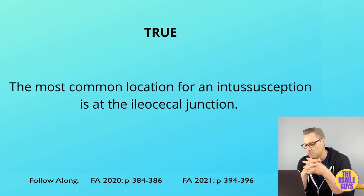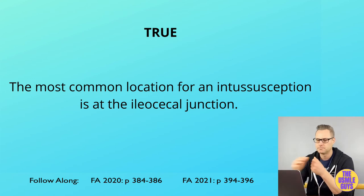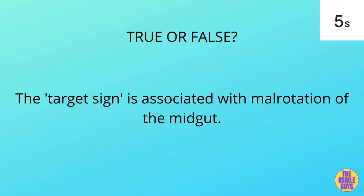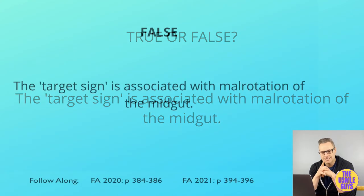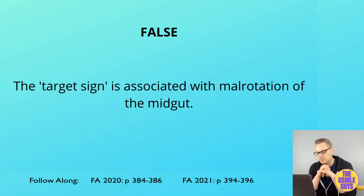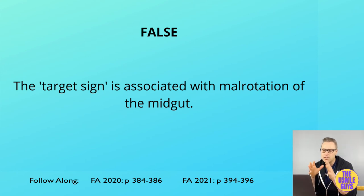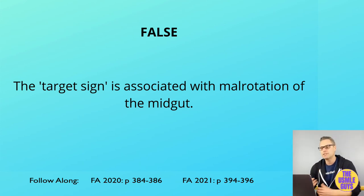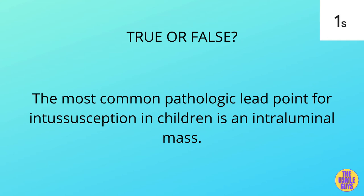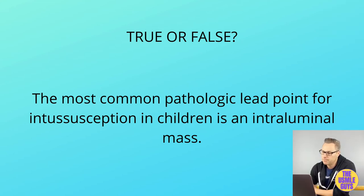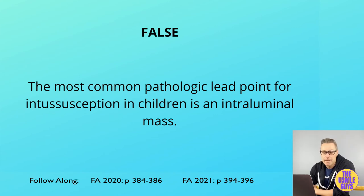The target sign is seen on ultrasound or CT in intussusception — not on plain x-ray. Additional findings include a classic sausage-shaped abdominal mass and a child drawing their legs up into the abdomen to relieve pain. In children, the most common lead point is a Meckel's diverticulum; in adults, the most common lead point is an intraluminal mass.